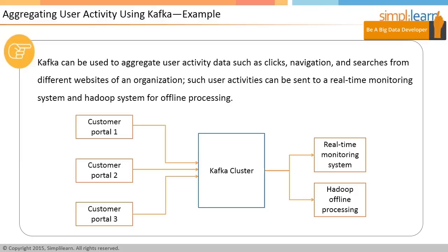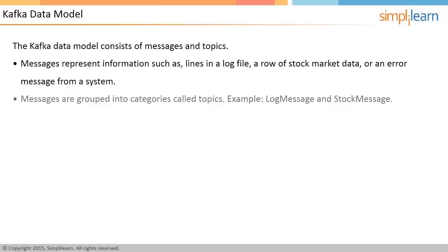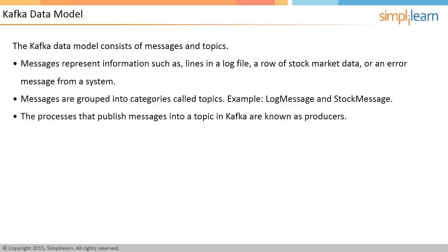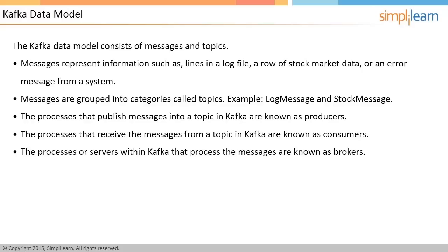The Kafka data model consists of messages and topics. Messages represent information such as lines in a log file, a row of stock market data, or an error message from a system. Messages are grouped into categories called topics, for example log message and stock message. The processes that publish messages into a topic are known as producers, and the processes that receive messages from a topic are known as consumers. The processes or servers within Kafka that process the messages are known as brokers.